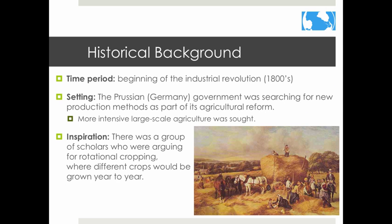The model was developed at the beginning of the Industrial Revolution in Prussia, which eventually became Germany. The Prussian government was trying to improve its agricultural system. There was a group of scholars arguing for rotational cropping, where different crops would be grown from year to year.